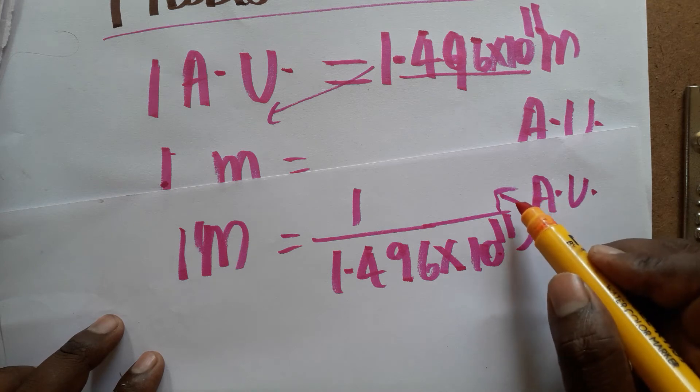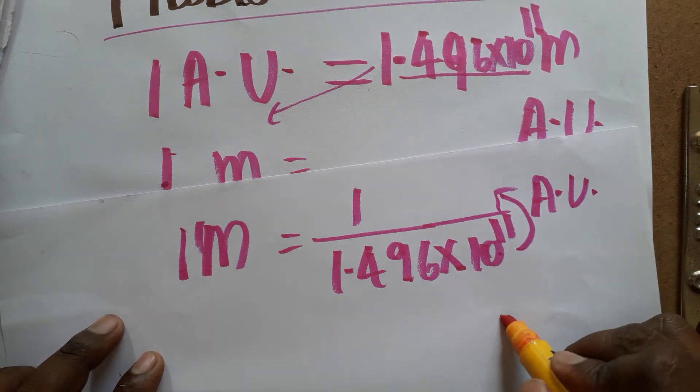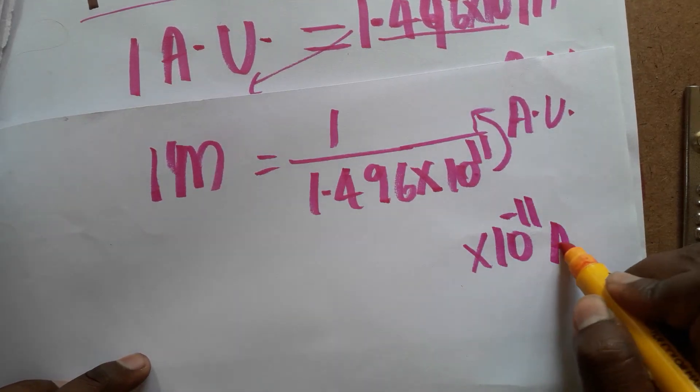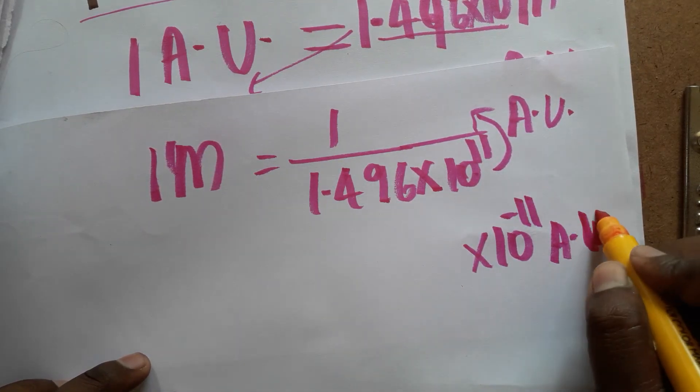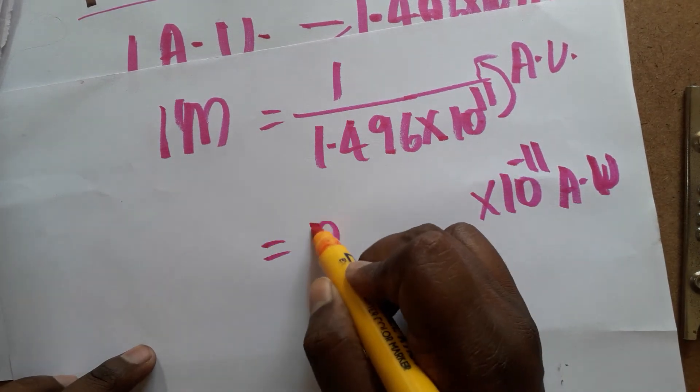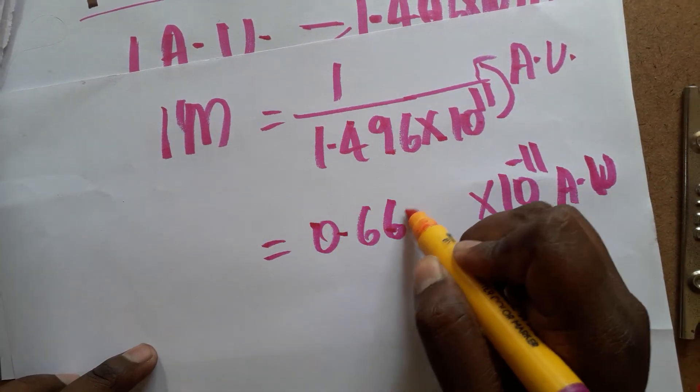When we are taken from denominator to numerator, 10 power 11 becomes minus 11. So 1 divided by 1.496, the value is going to be 0.6684 into 10 power minus 11 AU.